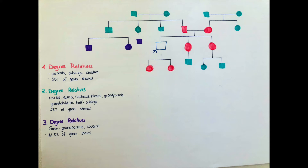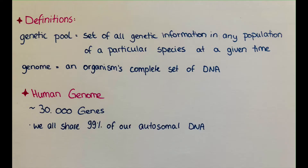I said a few words which I should maybe give you a definition for. If you're wondering what a gene pool is — it's the set of all genetic information in any population of a particular species at a given time. So for example, it's all the human genes which are contained within one or another individual living right now.